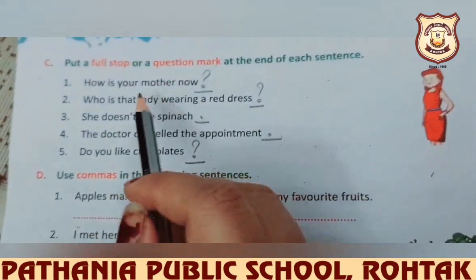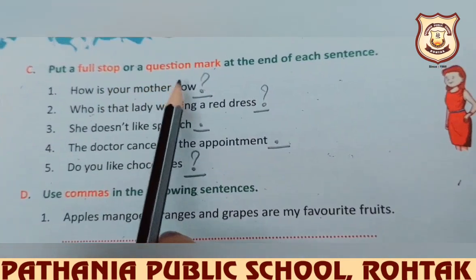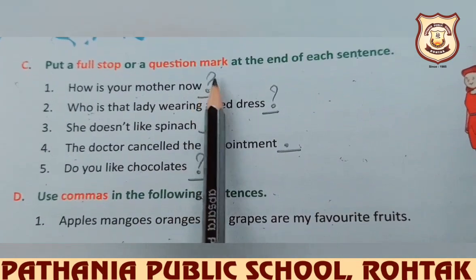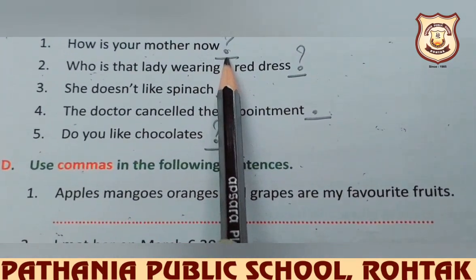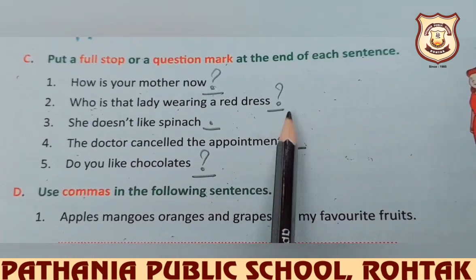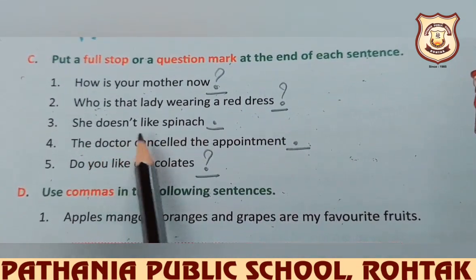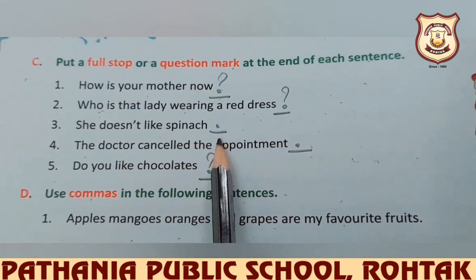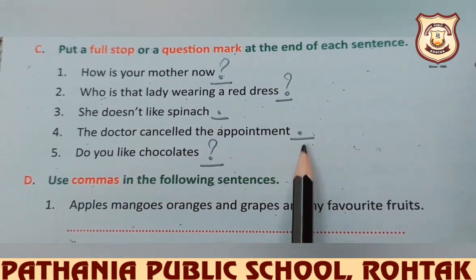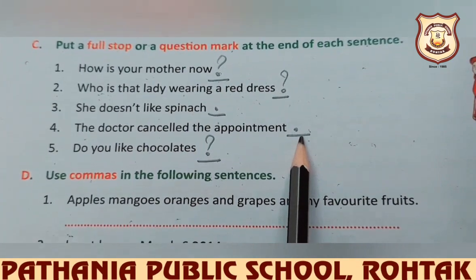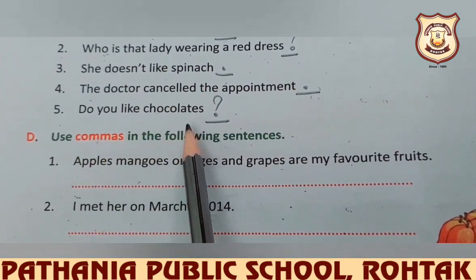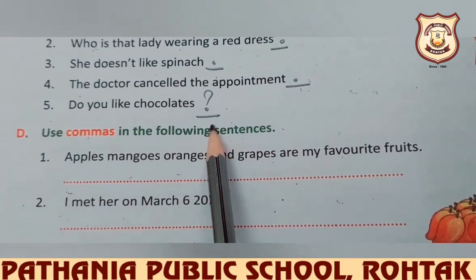Your C part: Put a full stop or a question mark at the end of each sentence. 'How is your mother now?' — it's a question, so put a question mark. 'Who is that lady wearing a red dress?' — question mark. 'She doesn't like spinach.' — full stop, simple sentence. 'The doctor cancelled the appointment.' — full stop. 'Do you like chocolates?' — it's a question, so question mark.